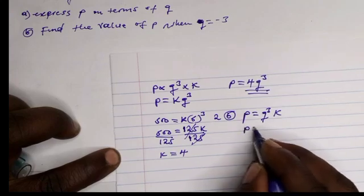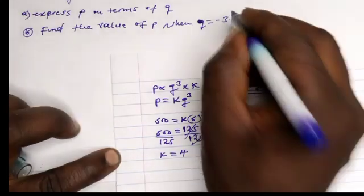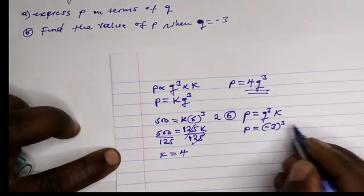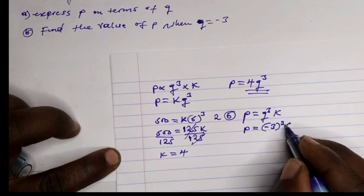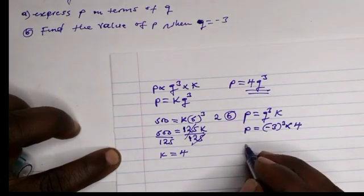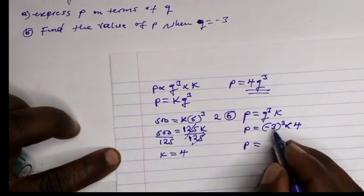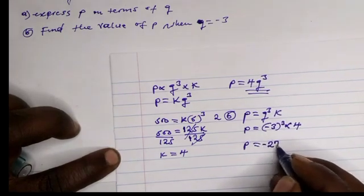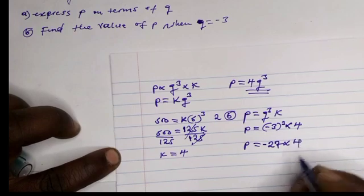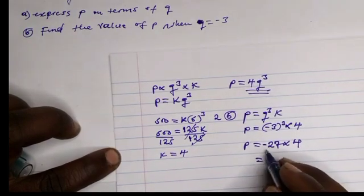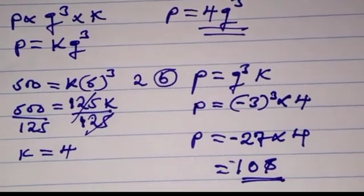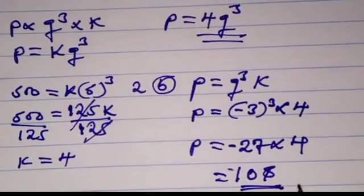P equals q cubed times k. We have q equals minus 3 cubed, and k equals 4, which we found earlier. So p equals negative 3 cubed, which is minus 27, multiplied by 4. Negative 27 times 4 is 108. This is our final answer. Thank you for watching.